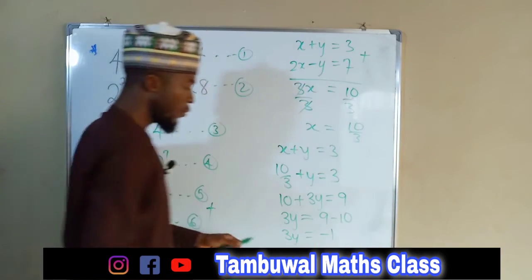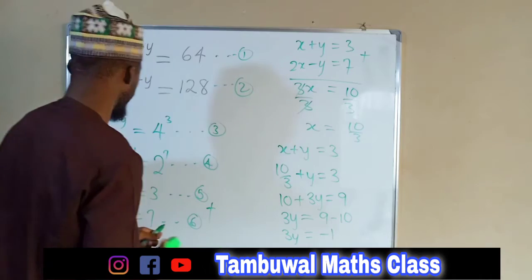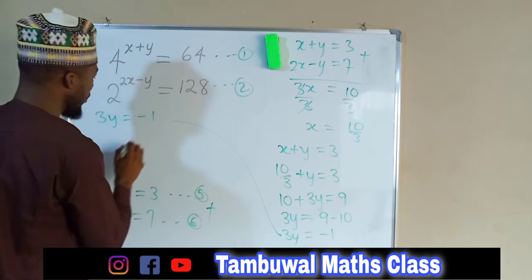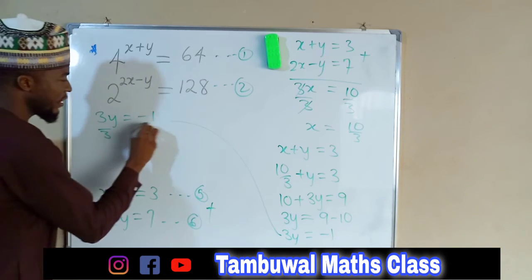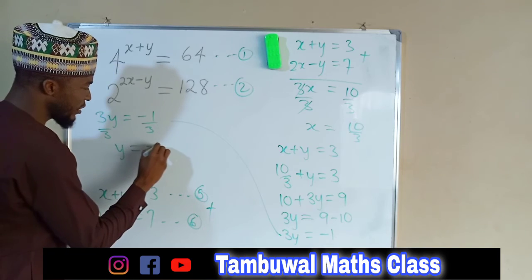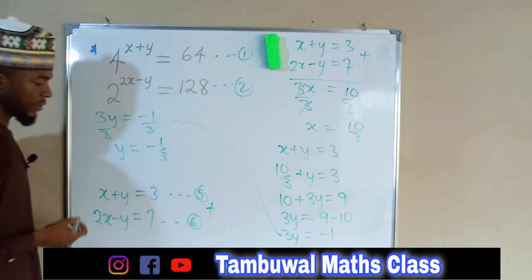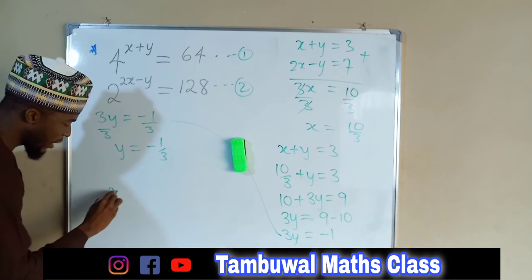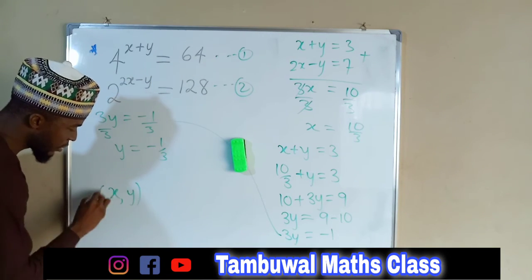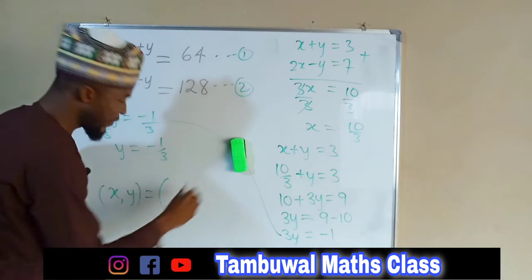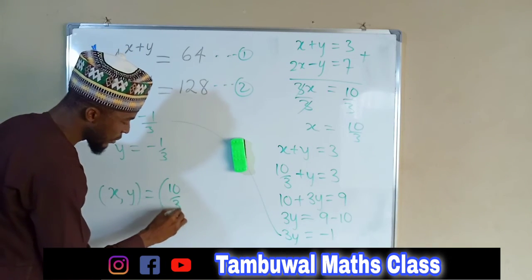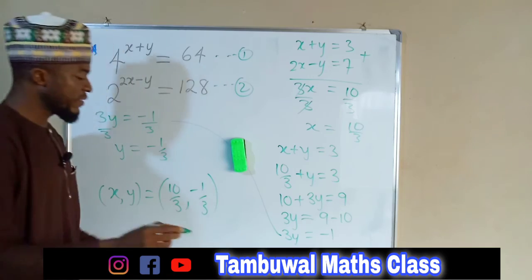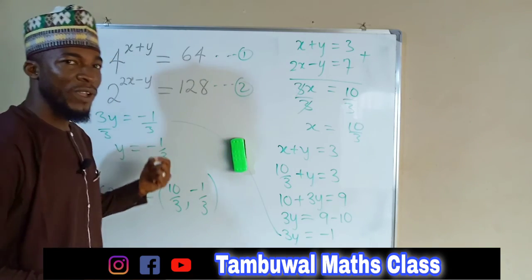To find Y, we divide both sides by 3. So from 3Y equals negative 1, dividing both sides by 3, we get Y equals negative 1 over 3. We can now conclude: for X, we have 10 over 3, and for Y, we have negative 1 over 3. These are the values of X and Y.